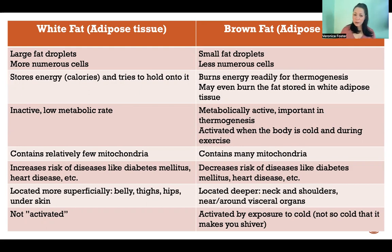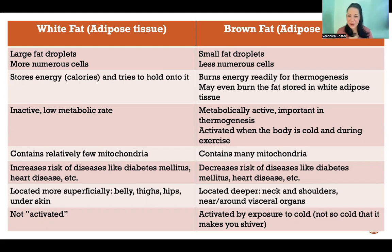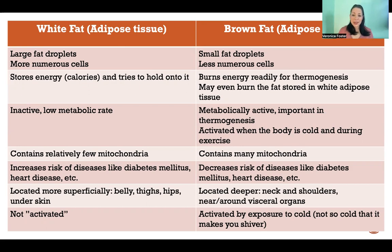White adipose is pretty much inactive. It has a very low metabolic rate, meaning it's not doing much — it's just sitting there, storing more and more fat depending on what you're feeding it. Whereas brown adipose tissue is very metabolically active. It's working hard, burning energy and producing heat to help keep your body warm. Brown fat is activated when the body is cold and also during exercise.